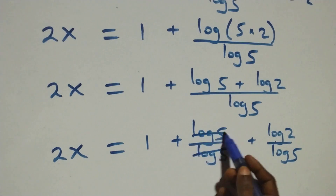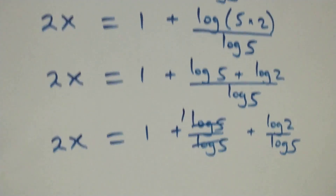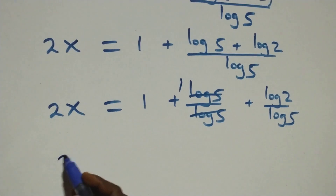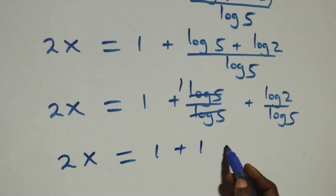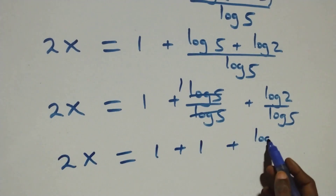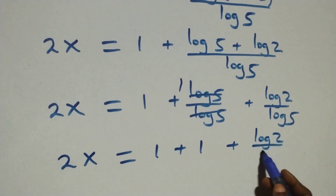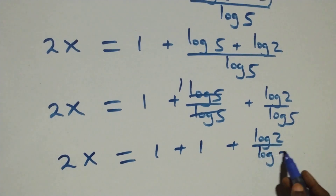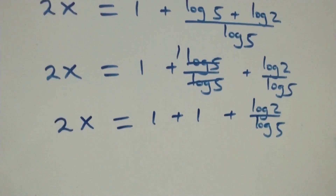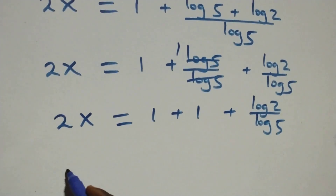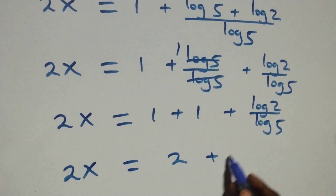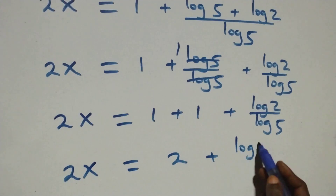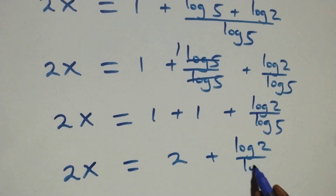Here log 5 cancels each other, leaving 1. So what we have becomes 2x equals 1 plus 1 plus log 2 over log 5, which gives 2x equals 2 plus log 2 over log 5.